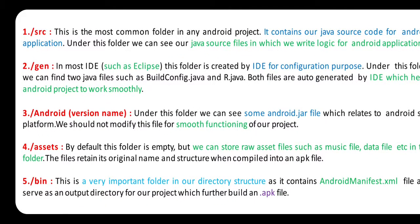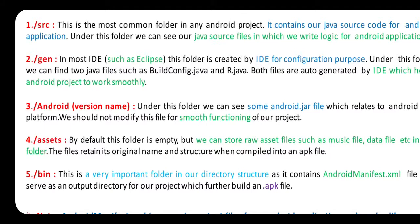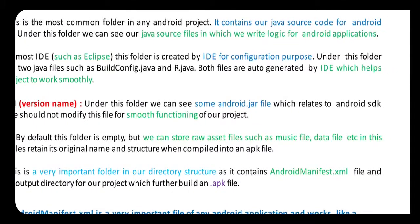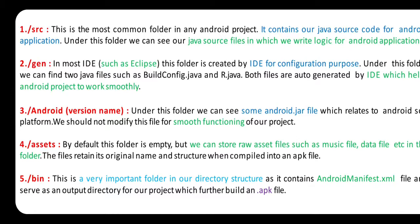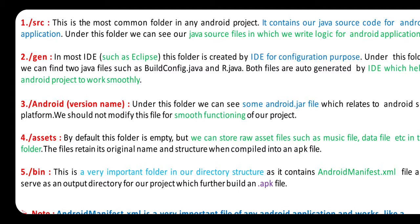Next is the GEN folder. In most IDEs such as Eclipse, this folder is created by the IDE for configuration purposes. Under this folder we can find two Java files: BuildConfig.java and R.java — both files are auto-generated by the IDE, which helps the Android project work smoothly. Next is the Android version folder — under this folder we can see some Android jar files related to the Android SDK platform. We should not modify this file for smooth functioning of our project.